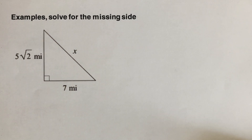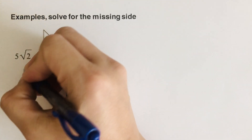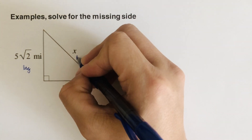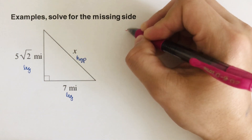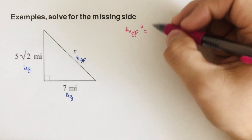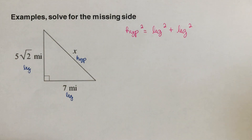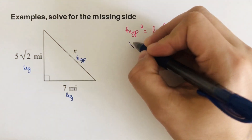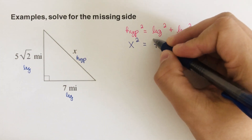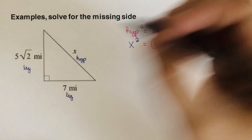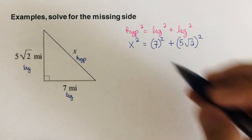Now let's look at the first example. We need to solve for the missing side x. This side is one leg, this is the other leg, and this is the hypotenuse. Using the formula — hypotenuse squared equals leg squared plus leg squared — we plug in the values. The hypotenuse is x, so x squared equals seven squared plus five square root of two, squared.